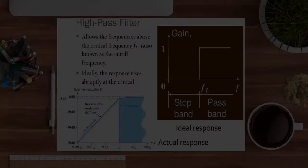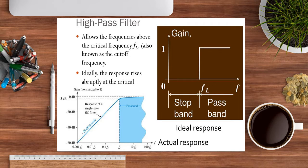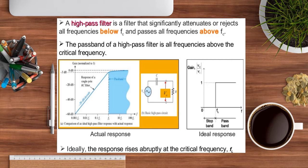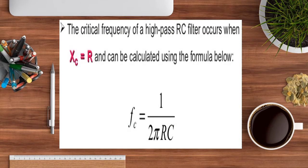The high pass filter stops unnecessary signals below the cutoff and passes frequencies above the critical frequency — the vice versa of the low pass filter. The single-pole RC filter response curve shows gain versus critical frequency with the actual and ideal case responses. The RC connection in a high pass filter uses a series capacitor to block low frequencies, and the arrangement allows the stop band and pass band to be clearly identified.